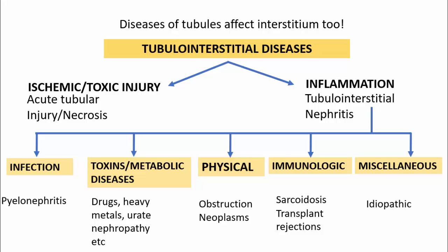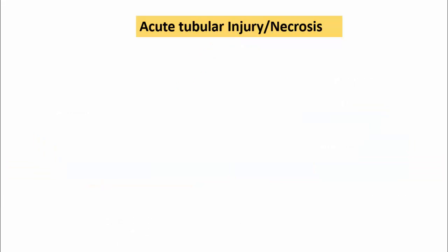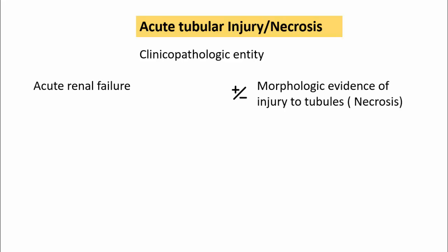Acute tubular injury or acute tubular necrosis is basically a clinical-pathologic entity — not a pure pathologic entity. It is characterized by acute renal failure with or without morphologic evidence of injury to the tubules. The necrosis may or may not be present in these cases, and that is the reason why the earlier term acute tubular necrosis has now been replaced with acute tubular injury.